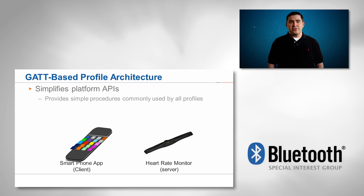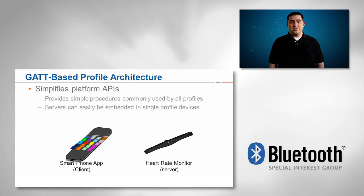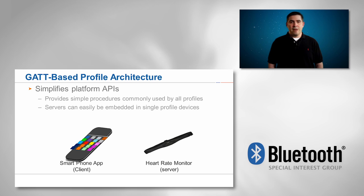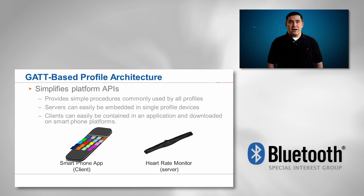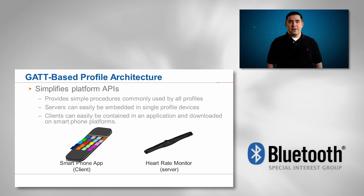The server requirements are fairly lightweight so that the GATT server and application data can easily be embedded in a small battery-operated device that implements a single profile. Many of these embedded server devices can easily provide a downloadable application client to enable a complete end-to-end solution. An example of this is a heart rate monitor chest strap delivered with a downloadable smartphone application.